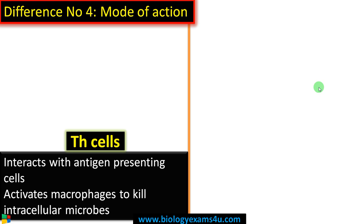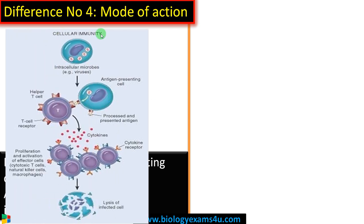Difference number four: mode of action. In the case of T helper cells, it interacts with antigen presenting cells and can activate macrophages to kill intracellular microbes. The antigen presenting cell engulfs pathogenic particles, processes them, and presents them on MHC class 2. T helper cells recognize this, then secrete chemical messengers like cytokines.